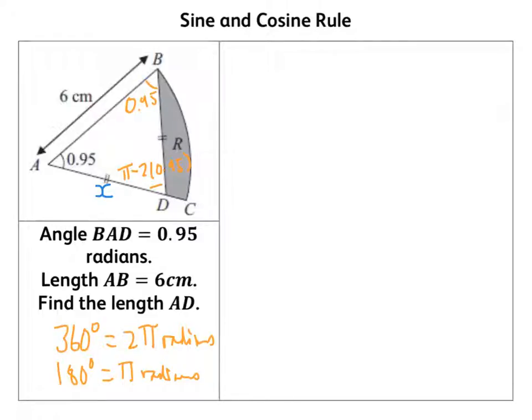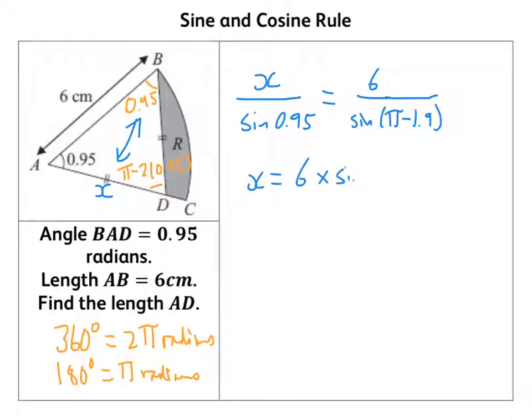I've got x over sine of 0.95, so the opposites here, equals 6 over sine of π minus 1.9 (two lots of 0.95). I've rearranged that: I get x equals 6 times sine 0.95 all over sine of π minus 1.9.